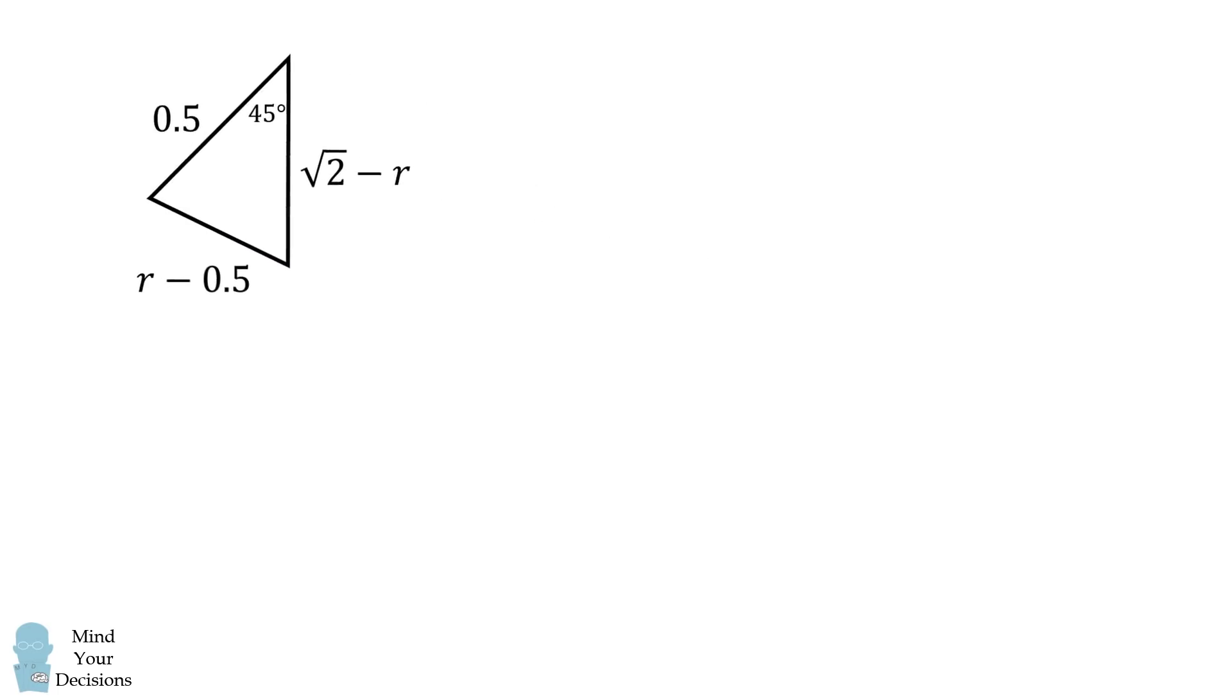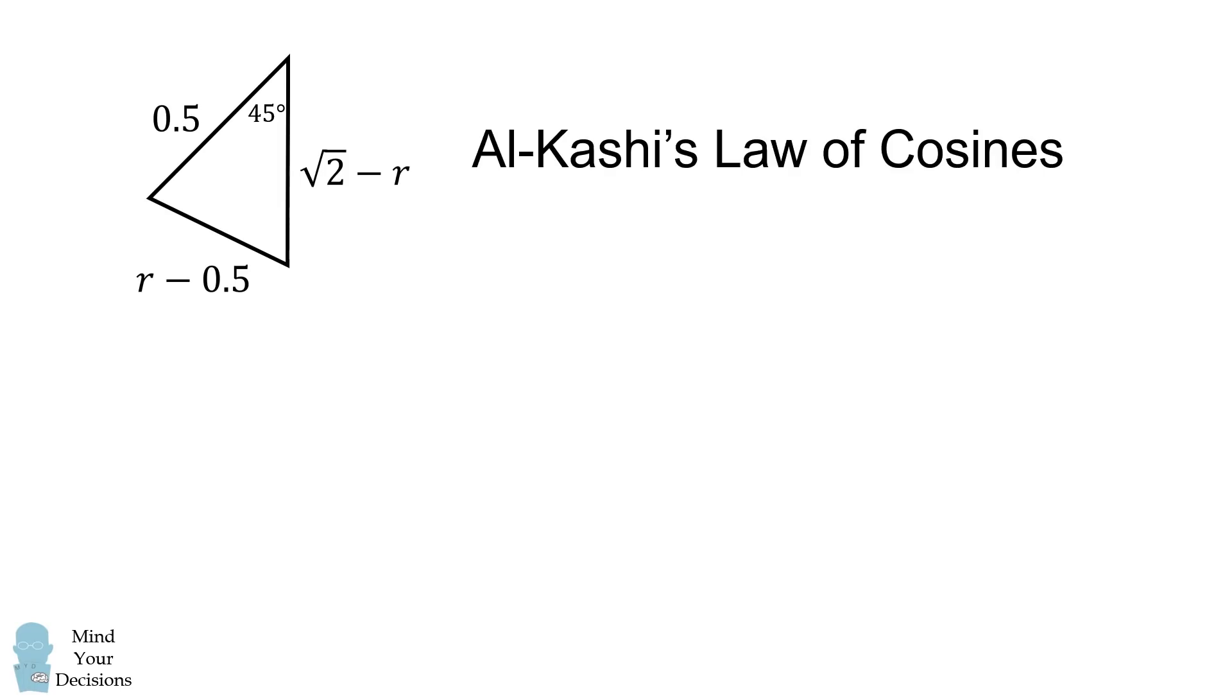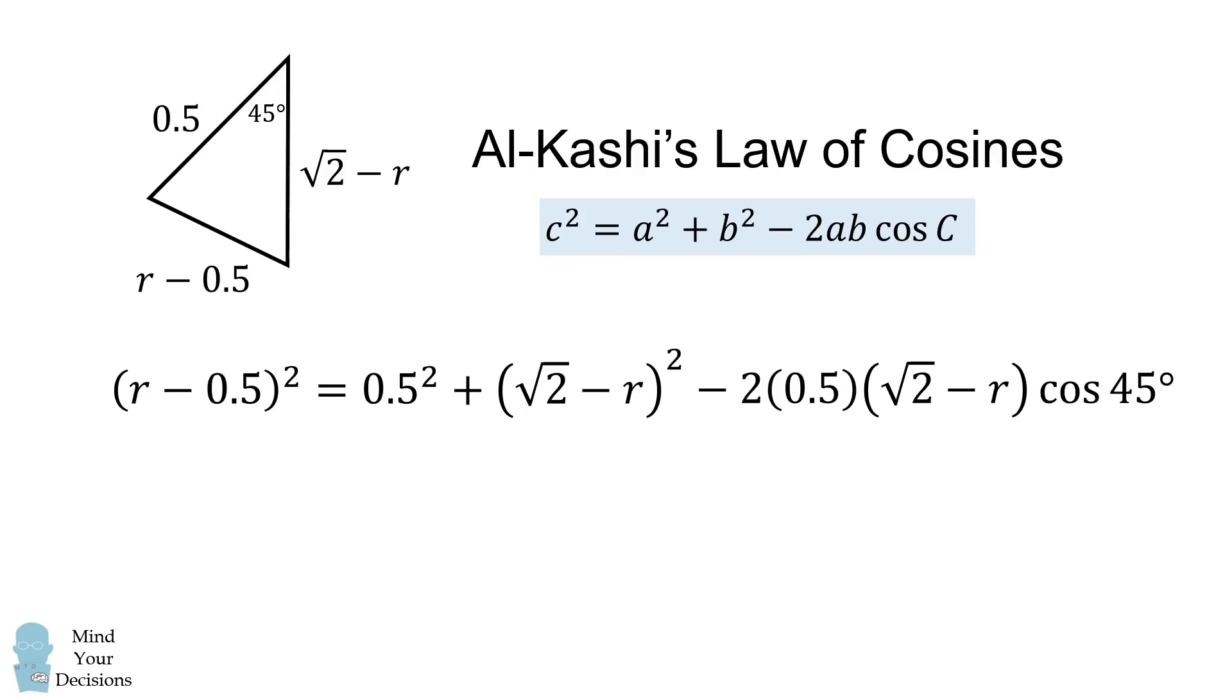From here, we'll be able to solve for r using Al-Kashi's law of cosines. It's a familiar formula. We can simply apply this formula to the side lengths and the angle. We will then simplify this equation to solve for r.